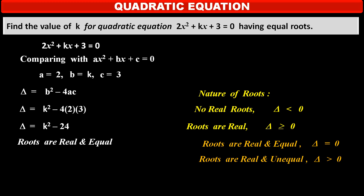It is given that this quadratic equation has equal roots, that is, the roots are real and equal. Therefore, according to the rules of the nature of roots, the discriminant delta is equal to 0. So, the value of the discriminant gives k² minus 24 = 0, which means k² = 24. Taking the square root, we get k = √24.